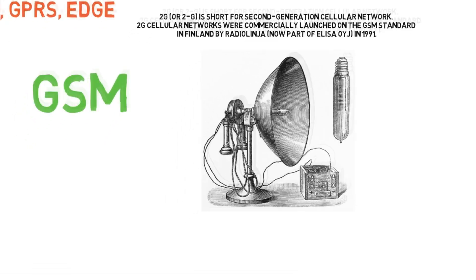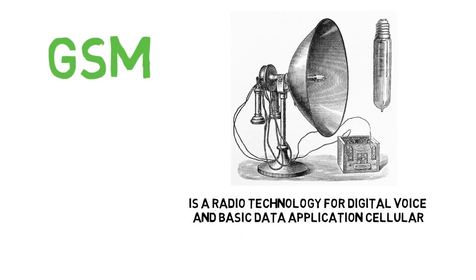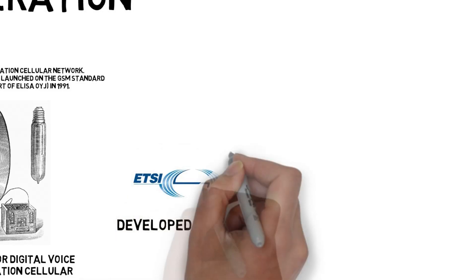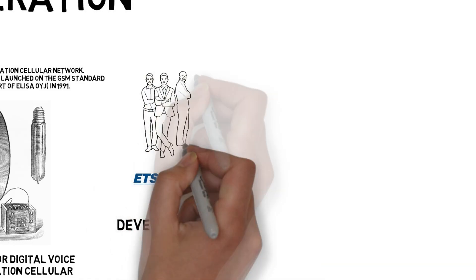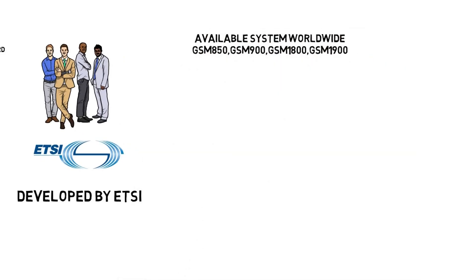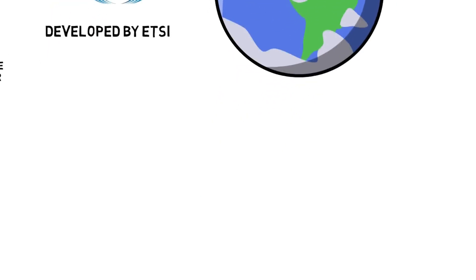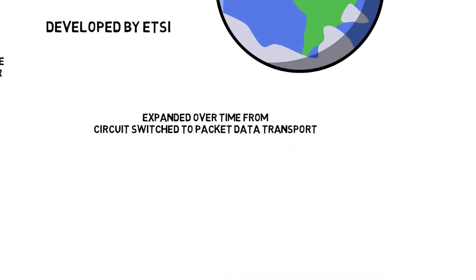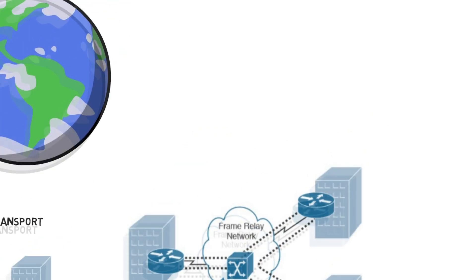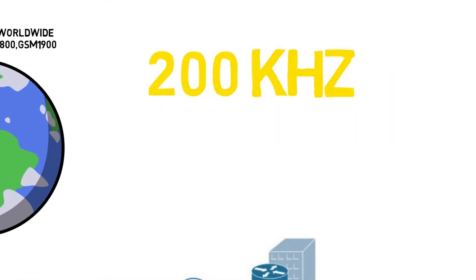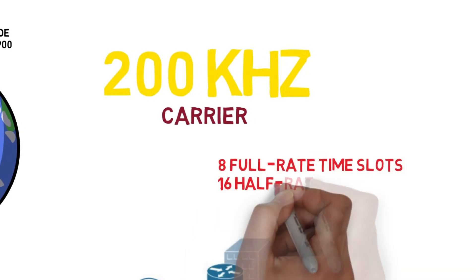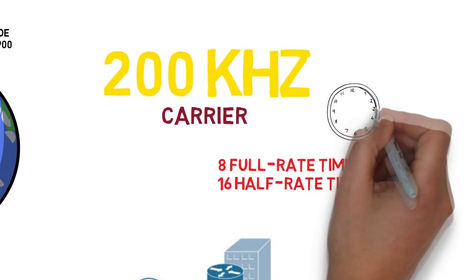GSM is a radio technology for digital voice, developed by ETSI. It is available as a system worldwide and expanded over time from circuit-switched to packet data transport. It has a carrier of 200 kHz with 8 full-rate and 16 half-rate time slots.